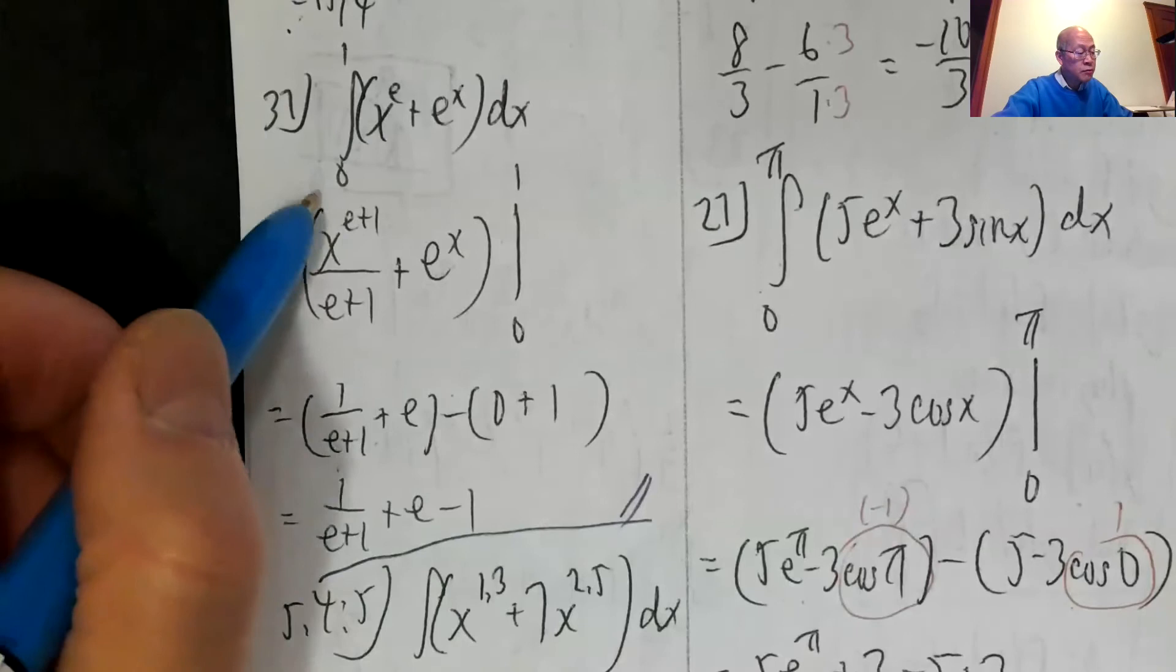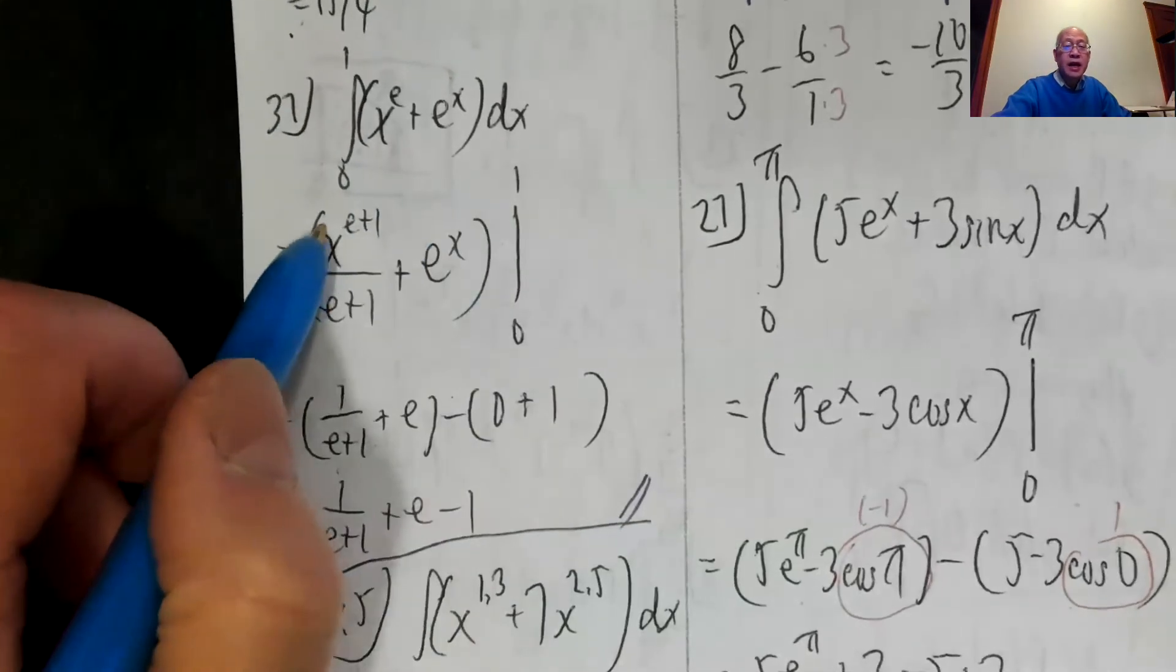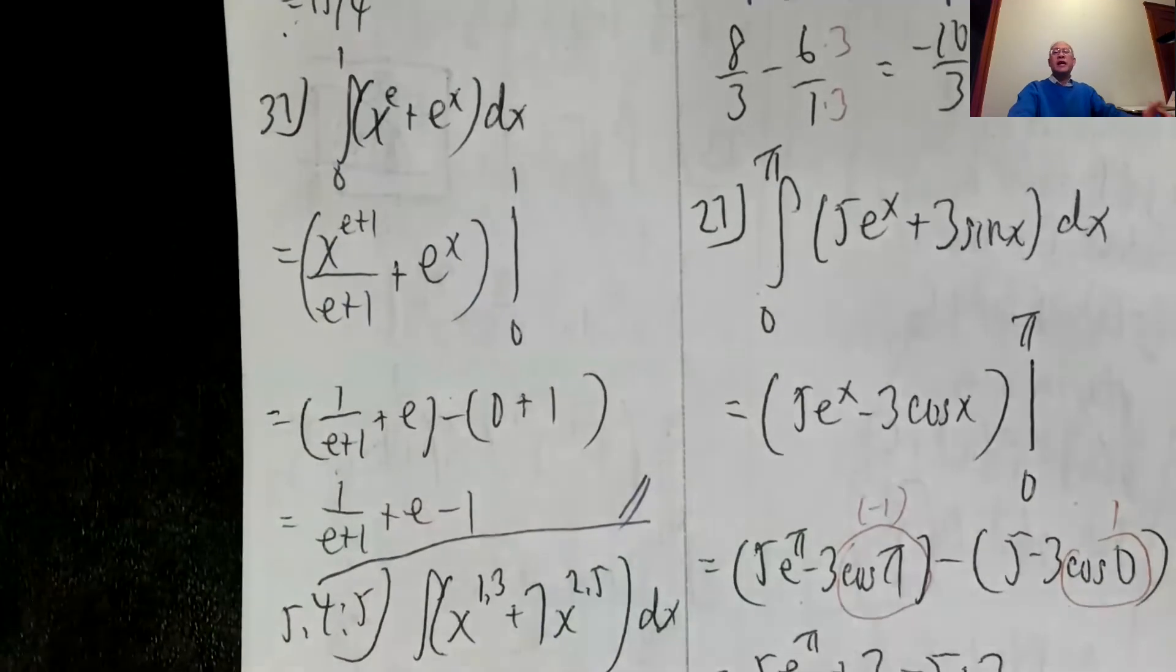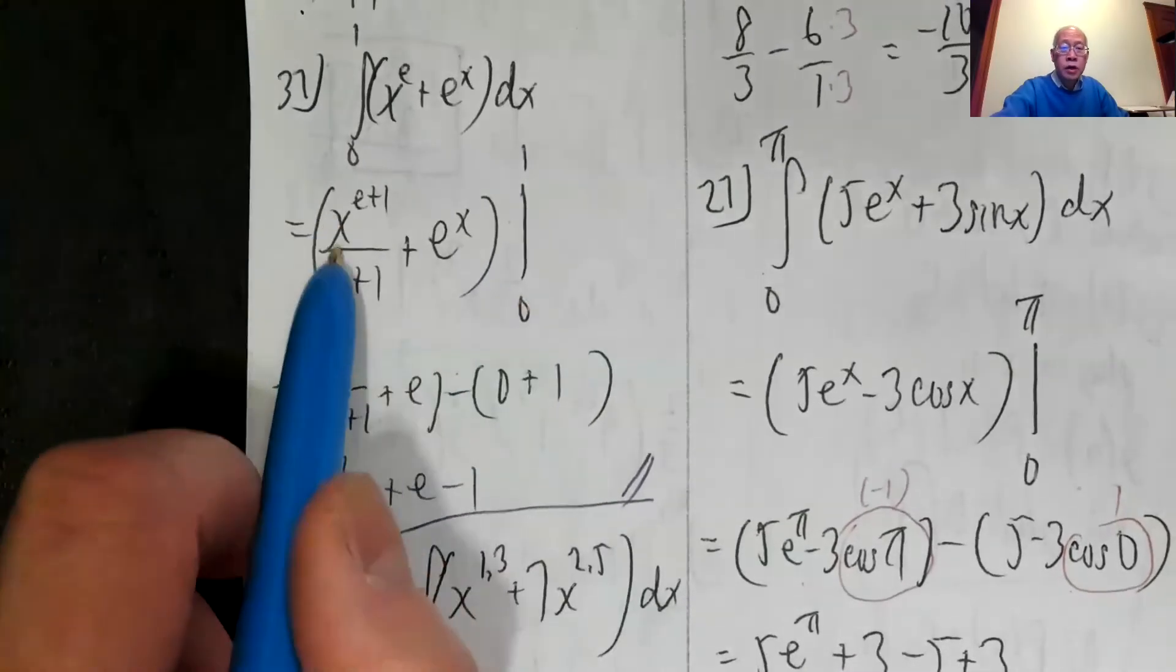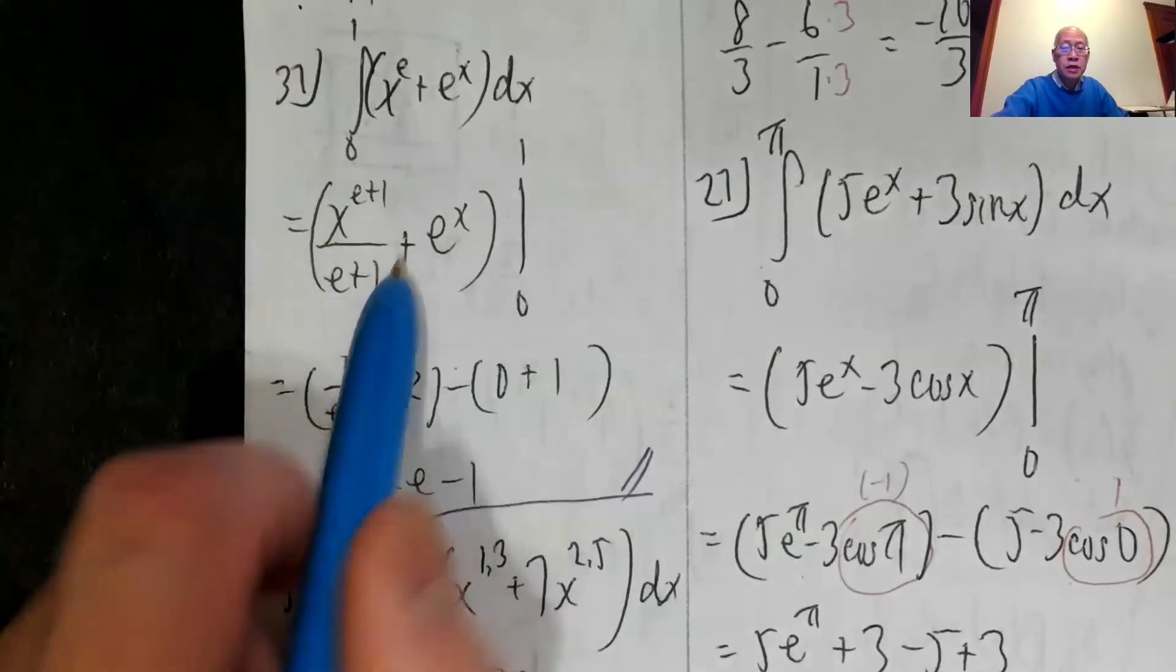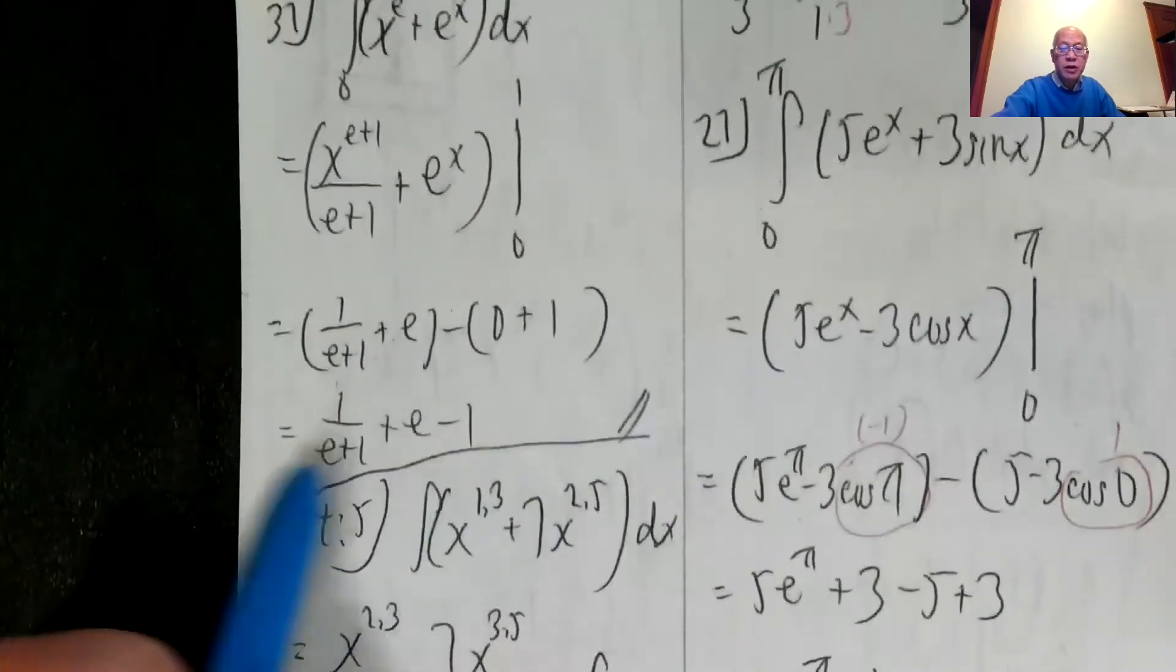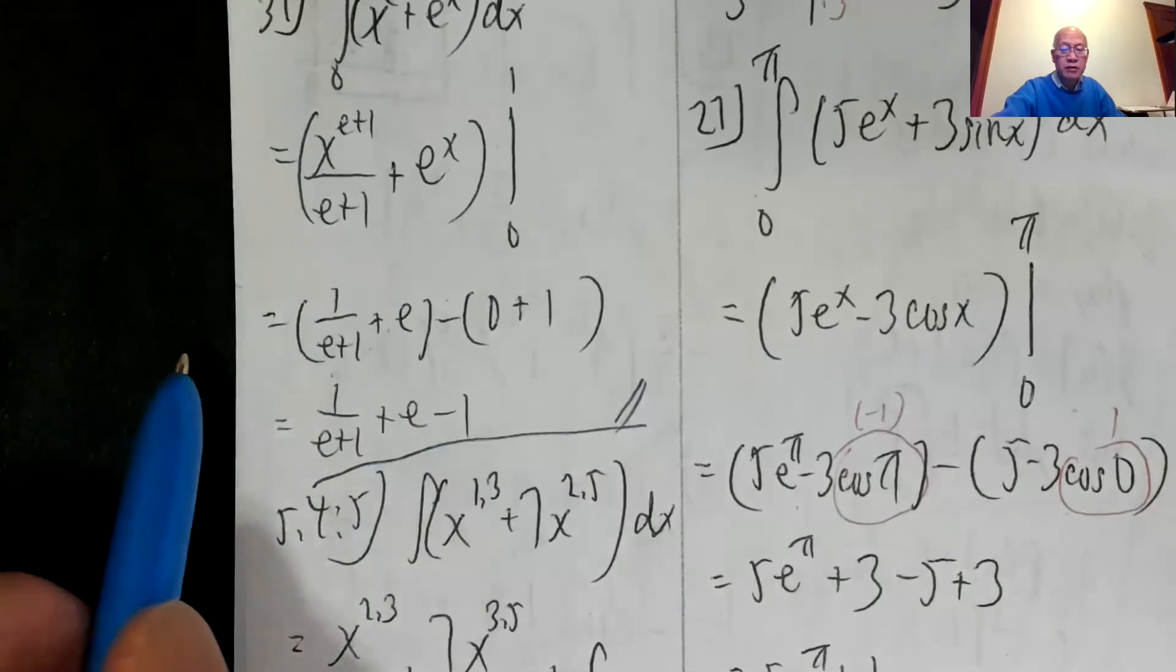Integral from zero to one of x to the e plus e to the x. So that's x to the e plus one over e plus one, that's a power rule. But the integral of e to the x is just e to the x from zero to one. Plug in one, one over e plus one plus e minus plug in zero, that's zero, but e to the zero is one. So one over e plus one plus e minus one, final answer.